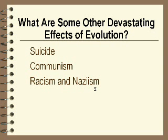Hitler thought that the white man was supreme. He actually blamed the Jews for bringing Negroes into Germany. He felt that the Negro was lower on the totem pole, so he thought the white race was supreme over other races. And of course he murdered approximately six million Jews.